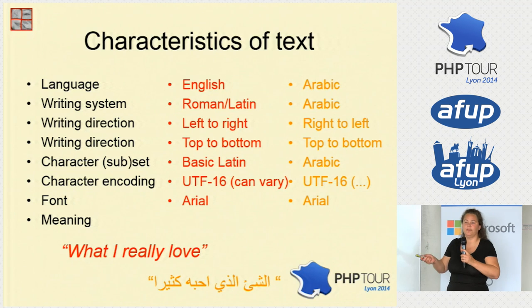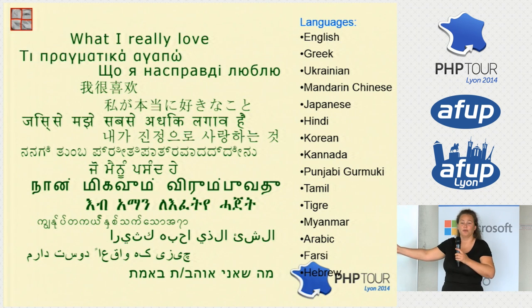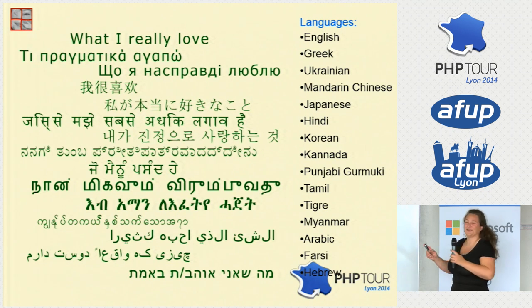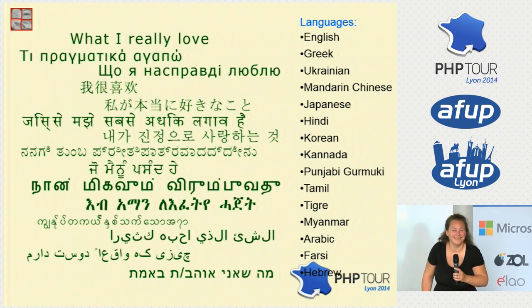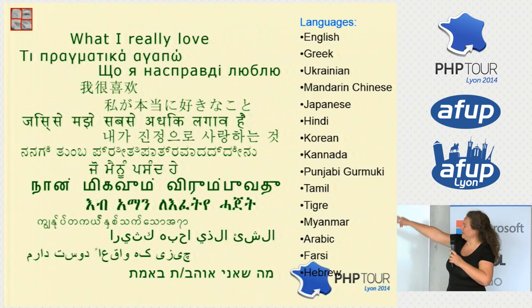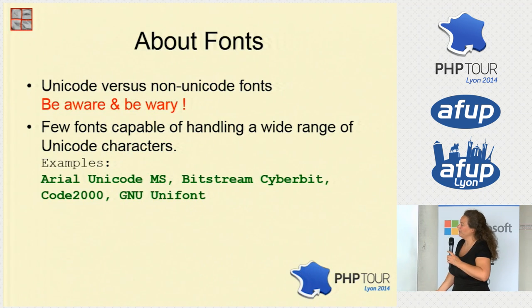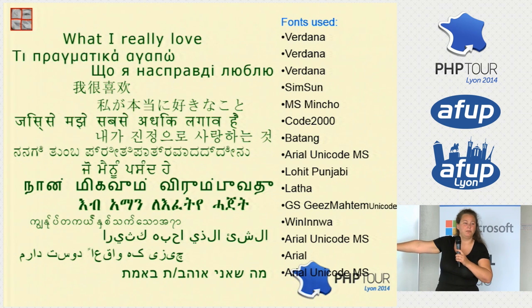Let's look at a phrase in a multitude of languages. I'm cheating here because I'm using someone else's computer, so this is an image — I don't trust other people's computers to get this right without using an image. This shows about 20 languages. If I show you what fonts I've used, you can see I've used a multitude of fonts to display these.